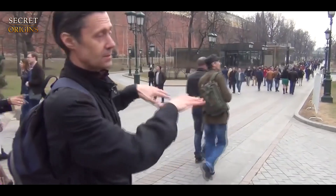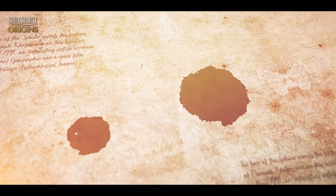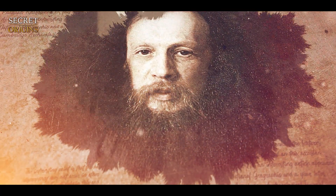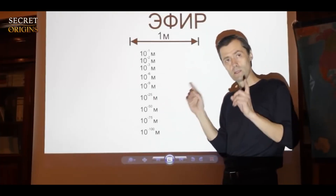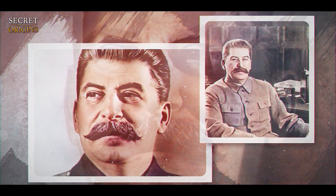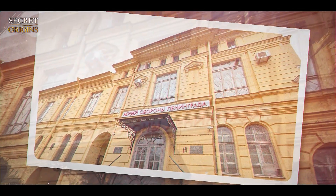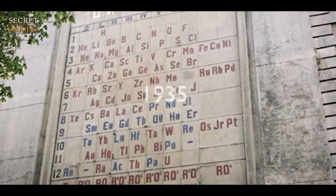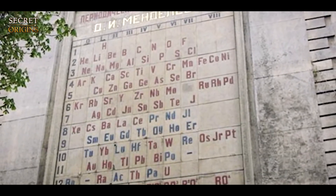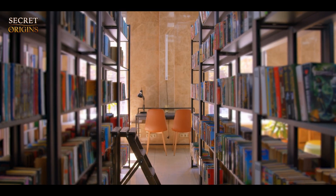Nowadays, academician Alexey Yuryevich Zolotorev is taking on the task of rehabilitating the original Mendeleev's table. Unwittingly he has the support of a very powerful ally. It is interesting enough that Stalin himself ordered the original version of the table to be displayed as a wall mosaic in the Leningrad Museum. This happened in 1935 and there the zero group is present, though at the same time it was being suppressed in textbooks.